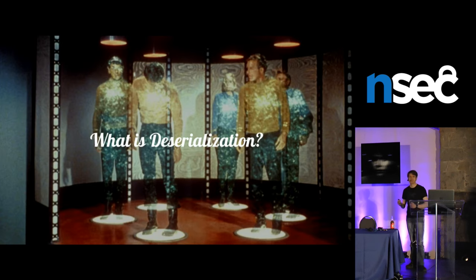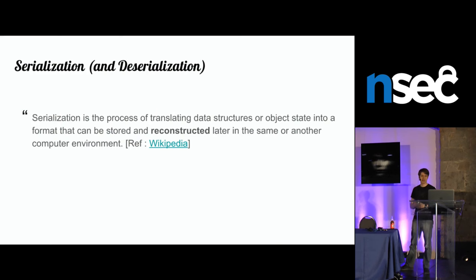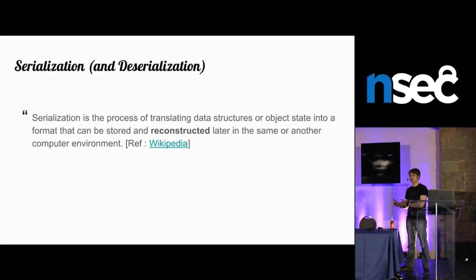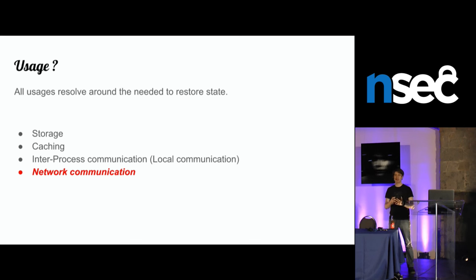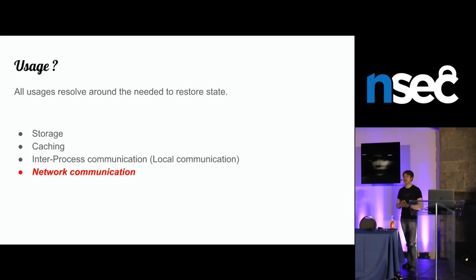So what is serialization? It's when you transform data and put it in a format that is ready to be transferred or stored. Why do we do this? We do this transformation either to persist a state — for example, storage of an application state, a session, or caching. Also for communication between processes. The most interesting case for us will be network communication, because in client-server communication there's much more potential for a pentester to get remote code execution.